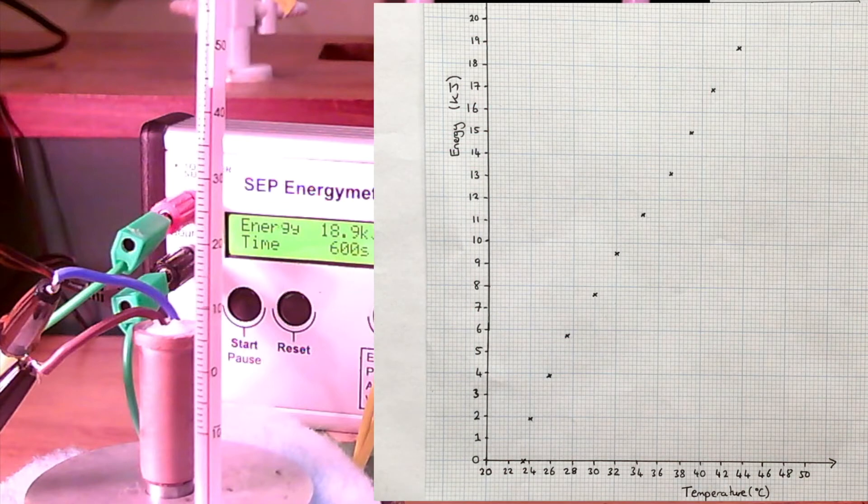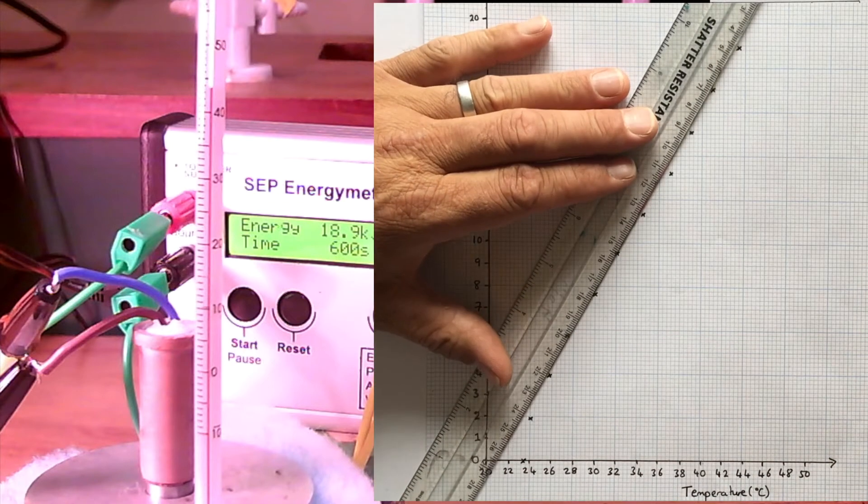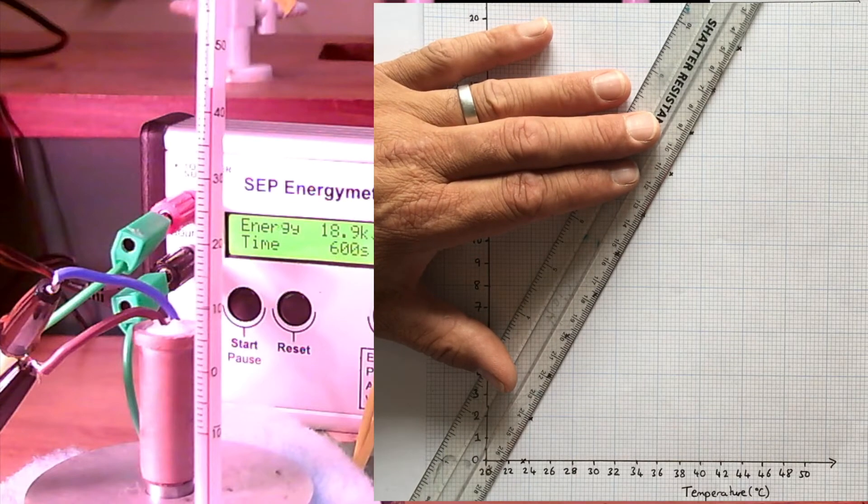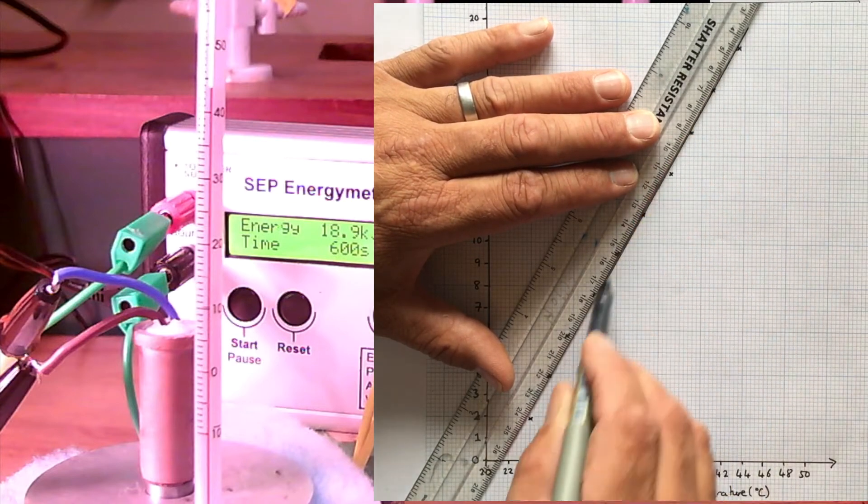So next thing we do is to plot a best fit line, which in this case is straight, making sure we've got the same number of points scattered one side as the other.